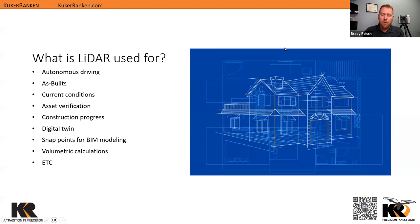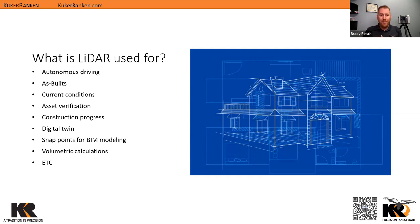We'll touch briefly on what LIDAR is used for: autonomous driving — a lot of cars now are using it, from Tesla to Zoox; as-built or current conditions on a building for architects; asset verification — you can scan before a hurricane comes through, pass it along to insurance to see what was there beforehand versus afterwards and what's damaged. Also construction progress tracking, digital twins — scan something, throw it into a BIM program and create models very, very fast. We can also pull up volumetric calculations of large areas.